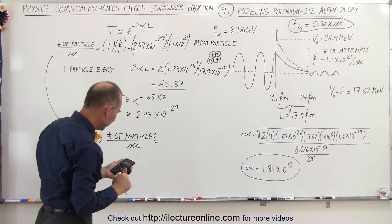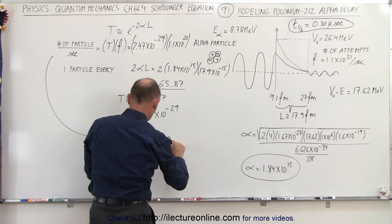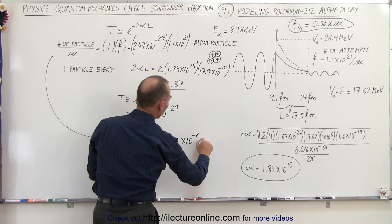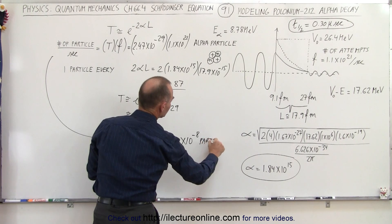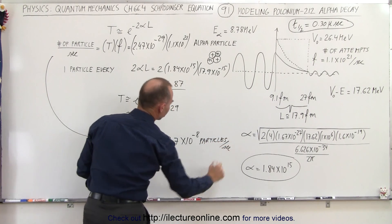Let's see here, we multiply that times 1.1e21, and it's not very many particles—that's about 2.7 × 10^-8 particles per second.